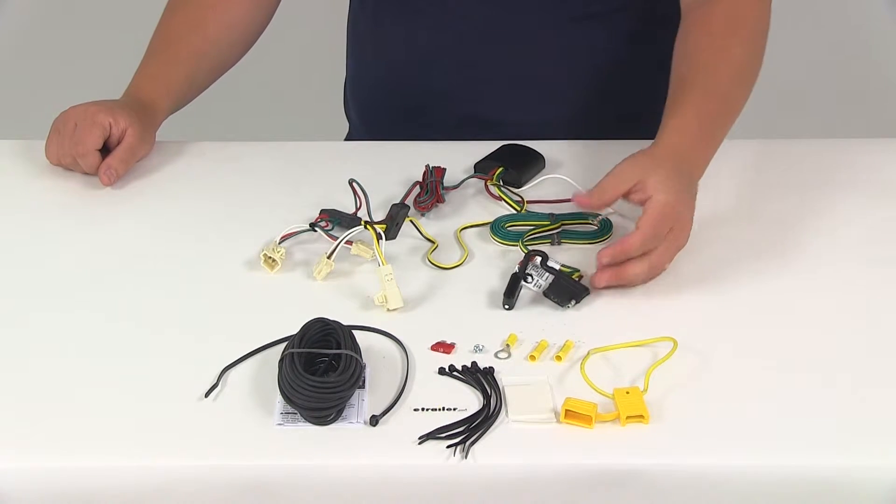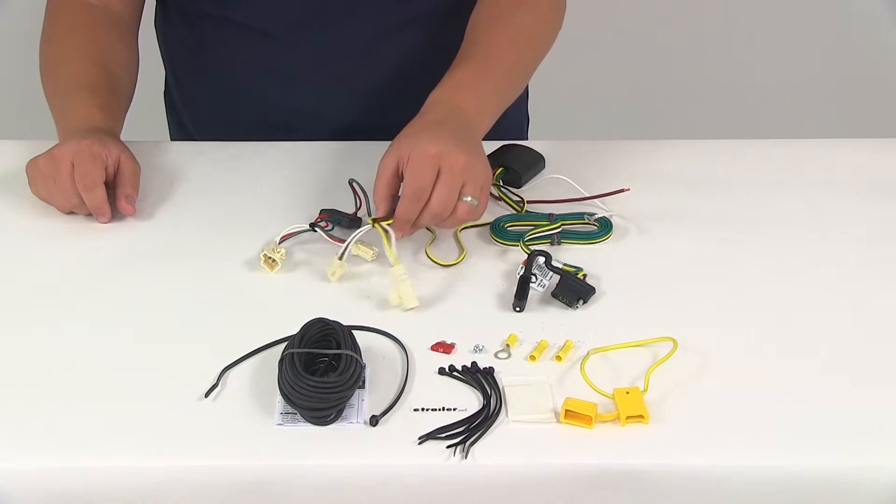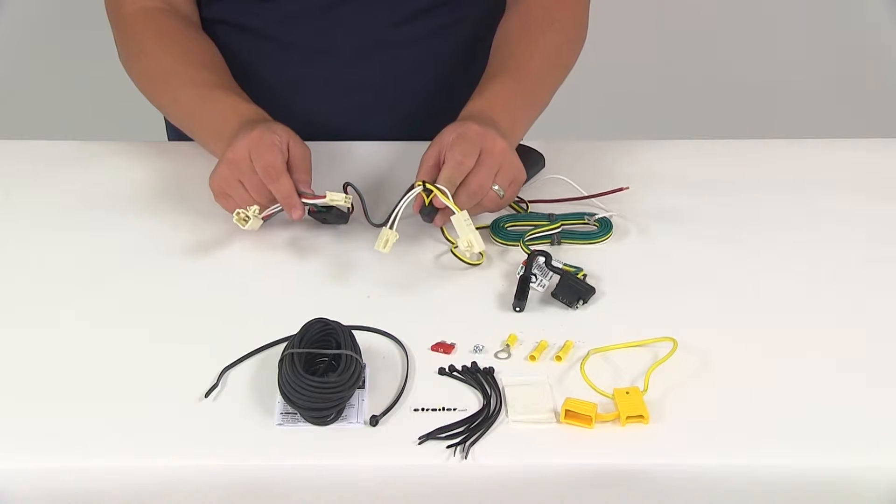The benefit of this system is that it's going to connect quickly and easily. All you have to do is locate the connection points in your rear cargo area. Then you're going to have two sets of T connectors.